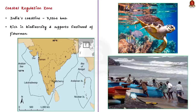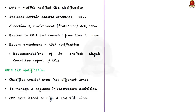What is a coastal regulation zone? India has a coastline of 7,516.6 kilometers which are rich in biodiversity and supports the livelihood of coastal communities. So conservation and protection of the coastal environment becomes an important task. For this purpose, in 1991, the Union Ministry of Environment notified the Coastal Regulation Zone notification, which declares certain coastal stretches as coastal regulation zones. In simple words, coastal regulation zone is a protected area near the coastline.